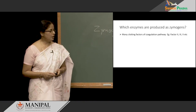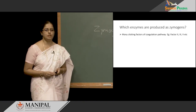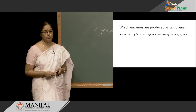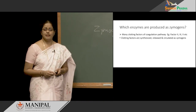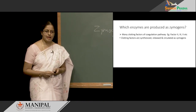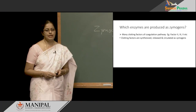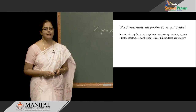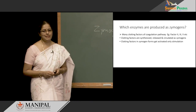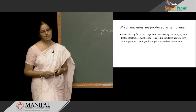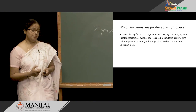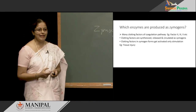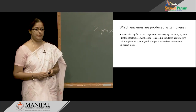We also have several clotting factors of the coagulation pathway which are produced in Zymogen forms. There are a few examples: factor 2, factor 3, factor 5, etcetera. These clotting factors are synthesized at different sites and released into the blood. They circulate in the blood as Zymogens and they get activated only when there is stimulation — for example, if there is tissue injury and we want the blood to clot so that there is no blood loss. At that time, these Zymogens get activated.